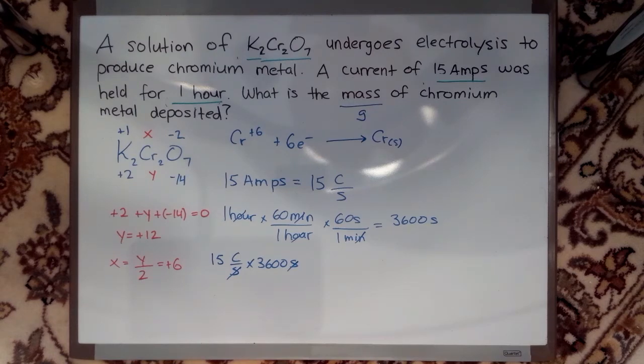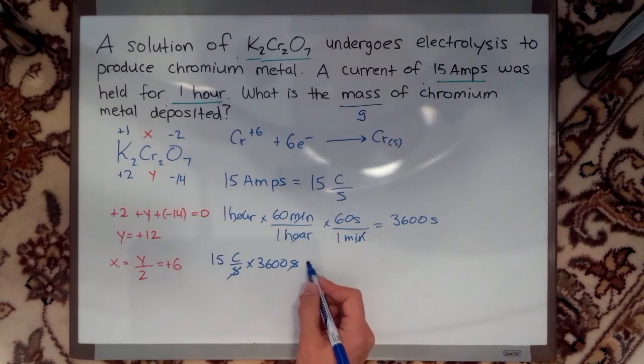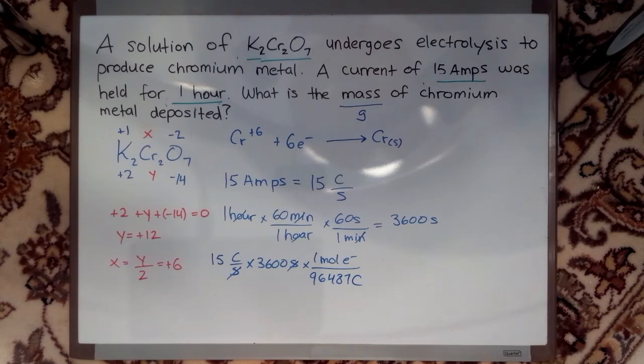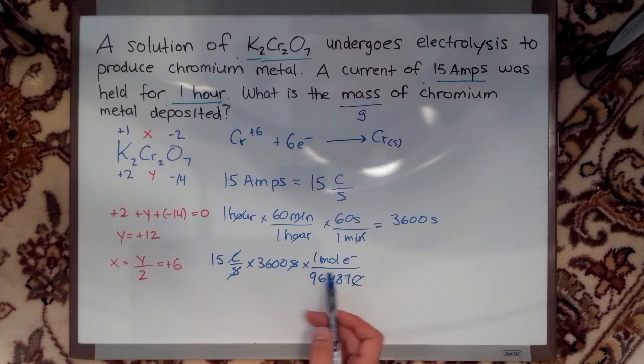Now I'm left with coulombs and I have to keep going. I have to convert it to grams somehow. Well, Faraday's constant, if I divide by it, will get rid of my coulombs. Because the units for Faraday's constant is coulombs per mole of electrons. So if I divide, I can get rid of my coulombs.